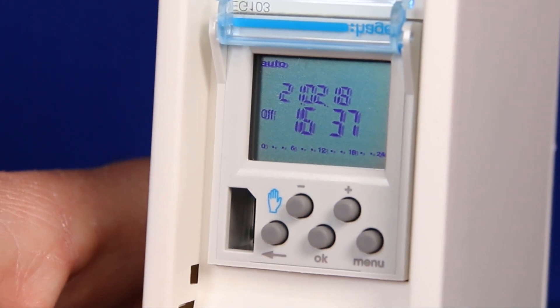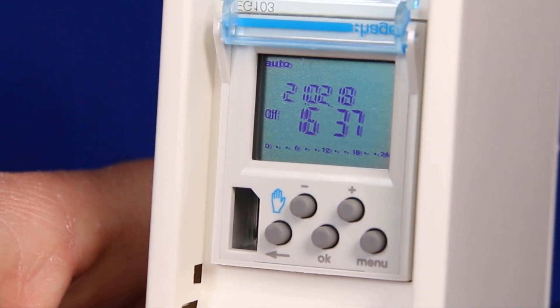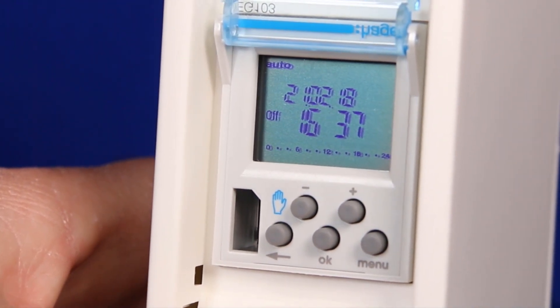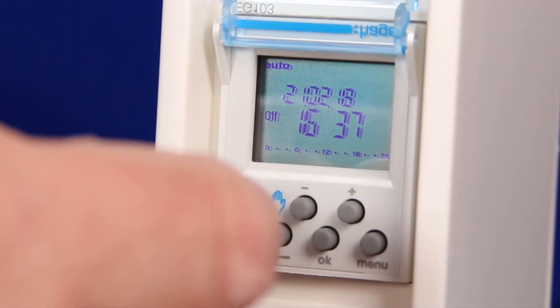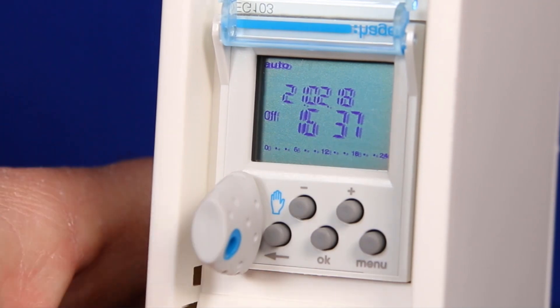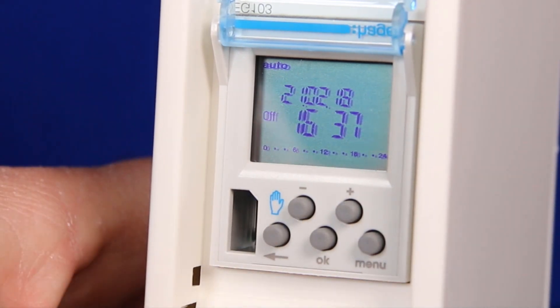Today we will learn how to program a Hager eg103 single channel time clock. This time clock can be programmed with the use of software and a key which makes this task very simple, especially if you have multiple time clocks.